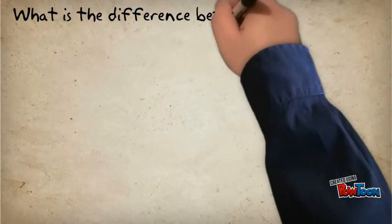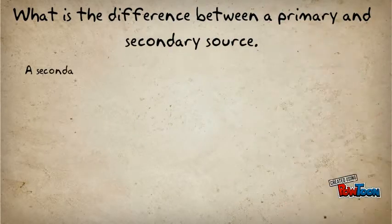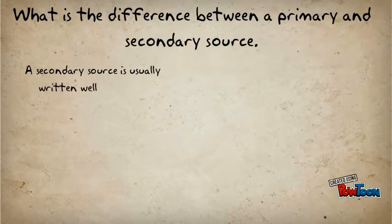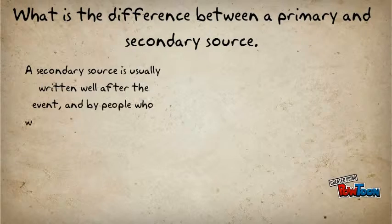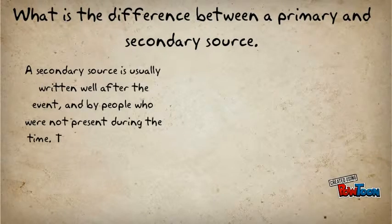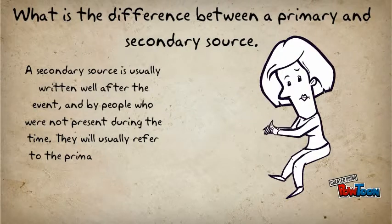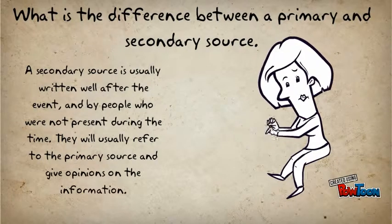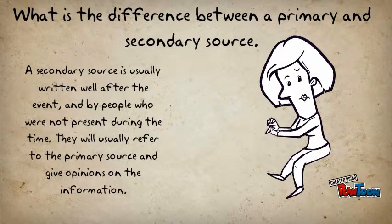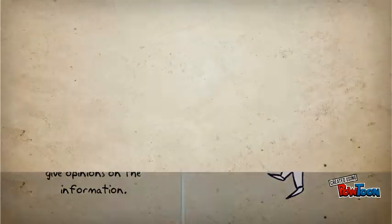What is the difference between a primary and a secondary source? A secondary source is usually written well after the event and by people who were not present during the time. They will usually refer to the primary source and give opinions on the information. Sometimes these opinions can be biased.